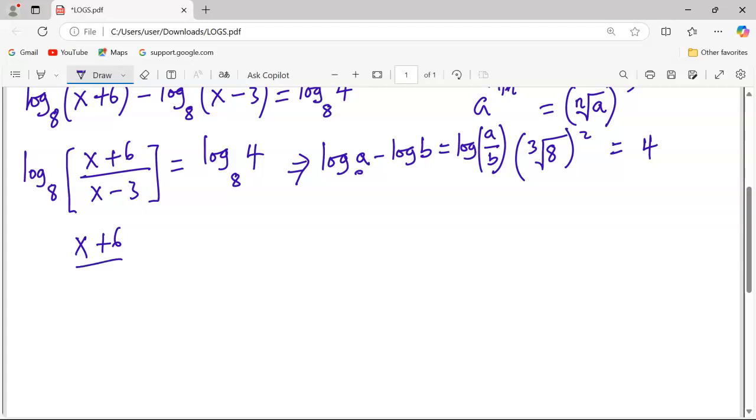x plus 6 out of x minus 3 is equivalent to 4. And when I cross multiply, because 4 is automatically over 1, then I'm going to have 4x minus 3 equivalent to x plus 6.